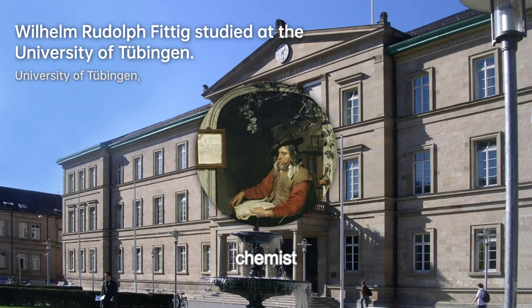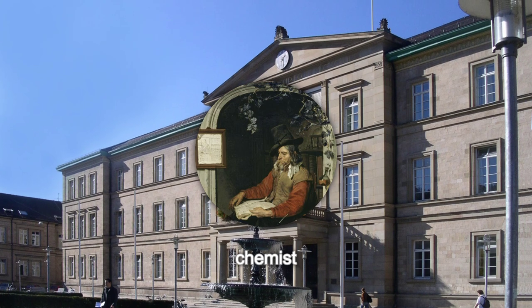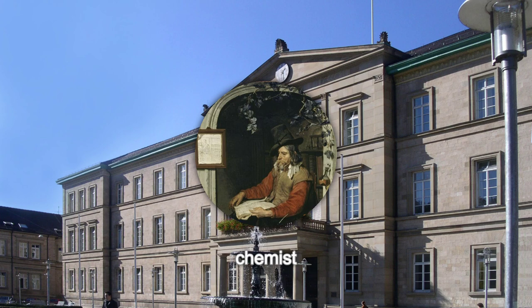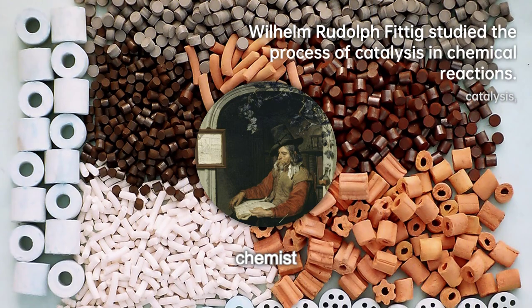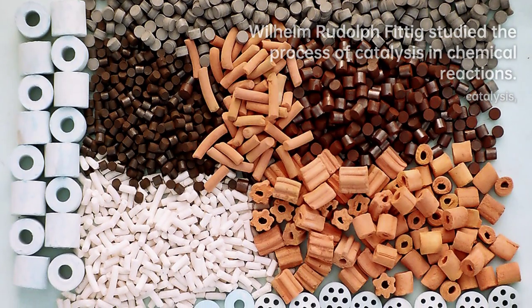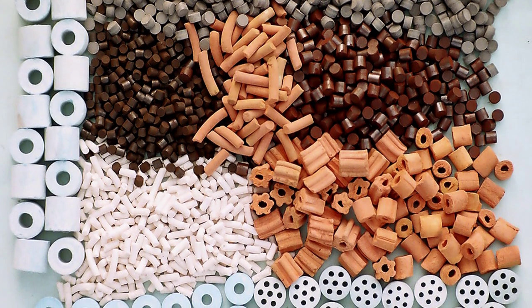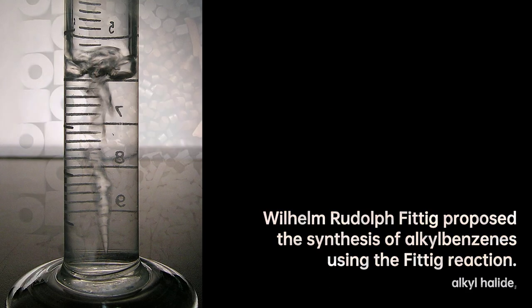Wilhelm Fittig, a brilliant chemist, embarked on a remarkable journey in the field of organic chemistry. Graduating from the University of Göttingen with a PhD in 1858, Fittig's early research focused on aldehydes and ketones. He made a groundbreaking discovery that these compounds could be reduced to secondary and tertiary glycols, which he named pinacones.